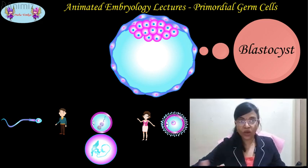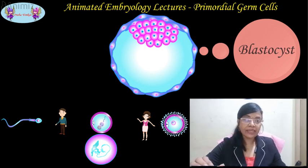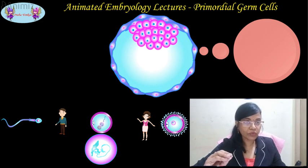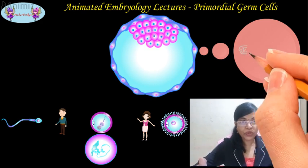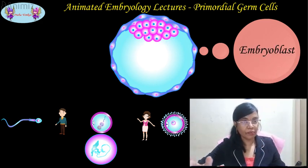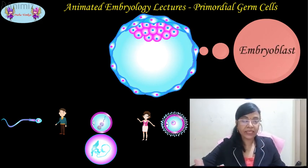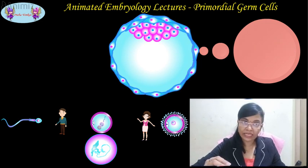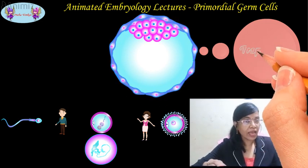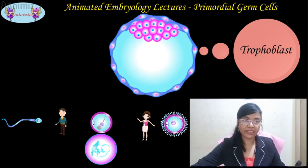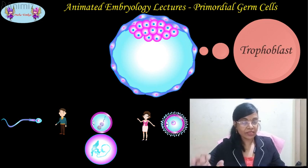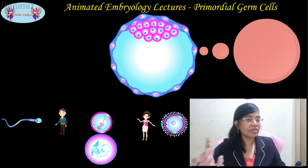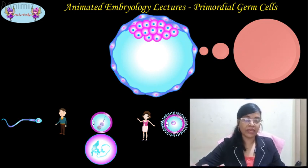The inner cell mass will give rise to the future embryo and is called the embryoblast. The outer cell mass will give rise to the supporting structures and is called the trophoblast. As of now, we are concentrating only on the inner cell mass.